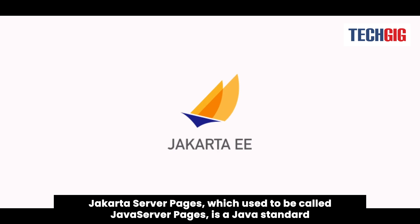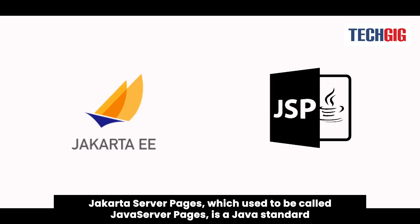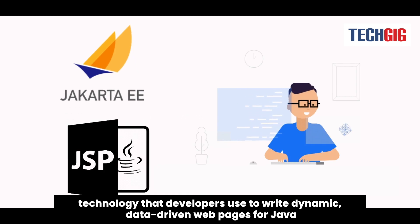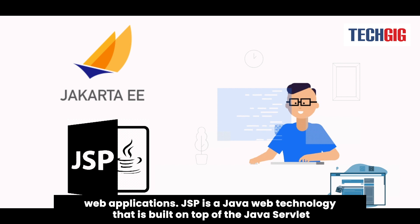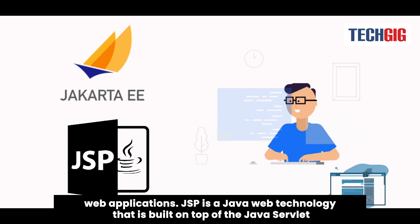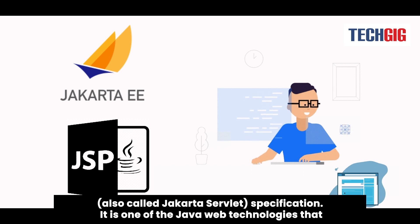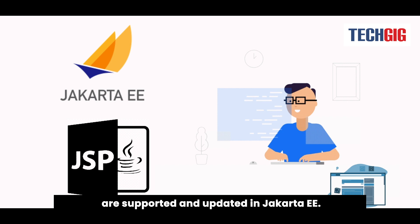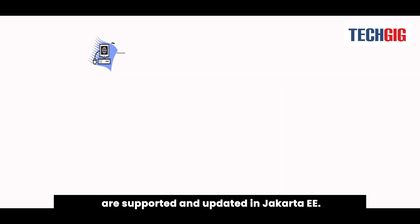Jakarta Server Pages, which used to be called Java Server Pages, is a Java standard technology that developers use to write dynamic, data-driven web pages for Java web applications. JSP is a Java web technology that is built on top of the Java servlet, also called Jakarta servlet, specification. It is one of the Java web technologies that are supported and updated in Jakarta EE.